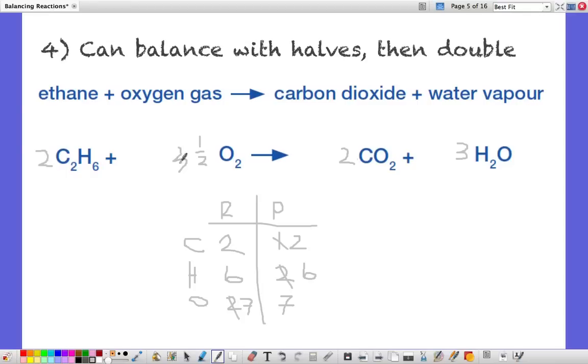But we're going to just double everything and that should give us nice whole numbers. One doubles to become two. Three and a half doubled becomes seven. Two doubled becomes four. Three doubled becomes six. And we can just check whether we've got everything balanced. Carbons on the left four, right's four. Hydrogen on the left, two times six is twelve. On the right six times two is twelve. Oxygen, seven times two is fourteen. And on the right four times two is eight plus another six is fourteen. And we're there.